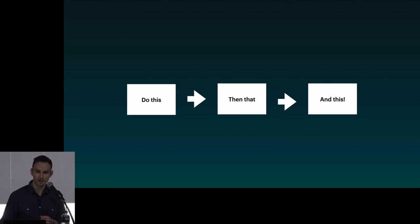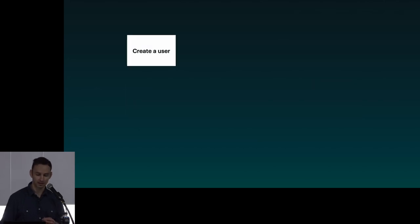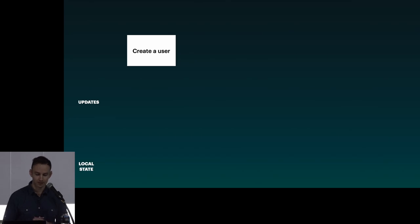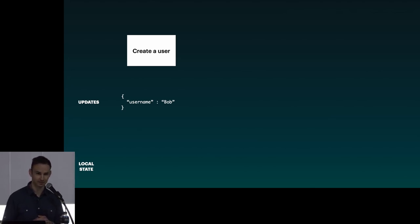The first event says we're going to do this, the second says we're going to do that, the third says we're going to do something else. Here's an example event: let's say we want to create a user when signing up. So we need an event called 'create a user.' On the bottom we see two rows: one called 'updates' and one called 'local state.' When we create a user, the update is going to be a piece of JSON.